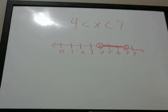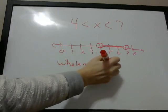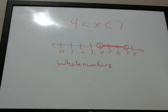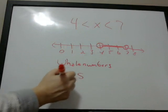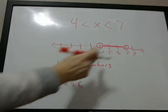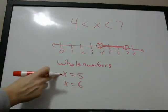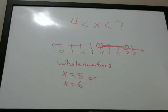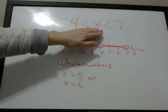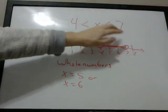So if the question is asking for whole numbers — remember those are basically integers, they don't have any sort of decimal or fractional part to them — whole numbers that satisfy this would be x can equal 5 and x can equal 6. Those are the only two whole numbers inside that interval, so this would be the answer: x can equal 5 or x can equal 6. Either one of those satisfy this equation where x is greater than 4 and x is less than 7.